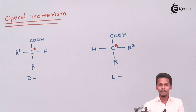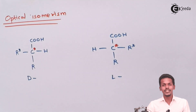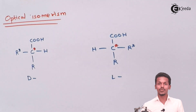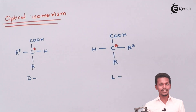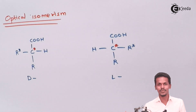These were the examples of the different types of isomers seen in organic compounds. Thank you friends for watching this video. I hope you liked it and understood the different types of isomers in organic compounds. Share this video with your friends and don't forget to subscribe. Thank you so much.